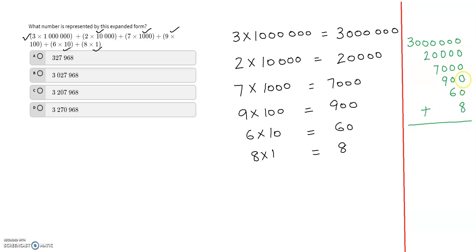Adding from the right: 8 plus 0 plus 0 plus 0 plus 6 gives the units and tens; then we get 9 in the hundreds, then 7 and 2, and then 3. The answer is B. That's how we solve when the expanded form is given and you need to write in standard form — write the steps, show the addition on the side, and get the answer.